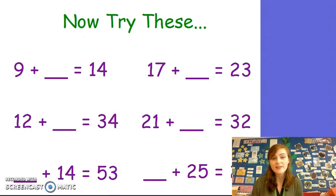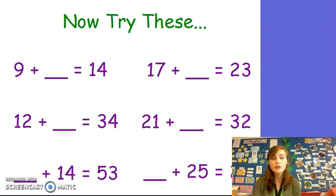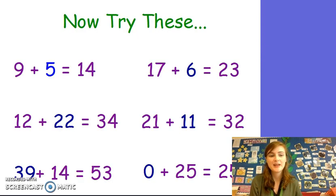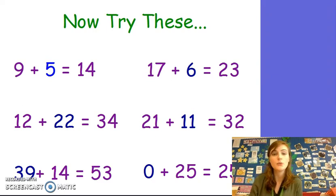Now you can try these at home yourself. Pause the video and use your number line or 100 square to figure out these missing number addition sentences. If you get a little confused, rewind the video so I can explain it to you again. When you are finished, start the video and we will answer them together. Good luck! If you are ready to check your answers, keep watching. I've filled in the answers in blue. Pause the video and double check that you have gotten the correct answer too. If you haven't, go back to your 100 square and try again.